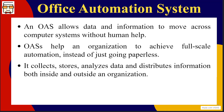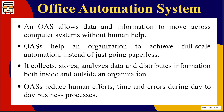An office automation system basically collects data, stores and analyzes it. This data comes not only from internal company sources but also from the outside world. When this data is analyzed, the information obtained is disseminated or distributed within different departments of the organization as required, and also across different offices of the same enterprise. This helps to reduce human effort, the time taken to complete tasks, and removes human errors that were earlier occurring in these processes.